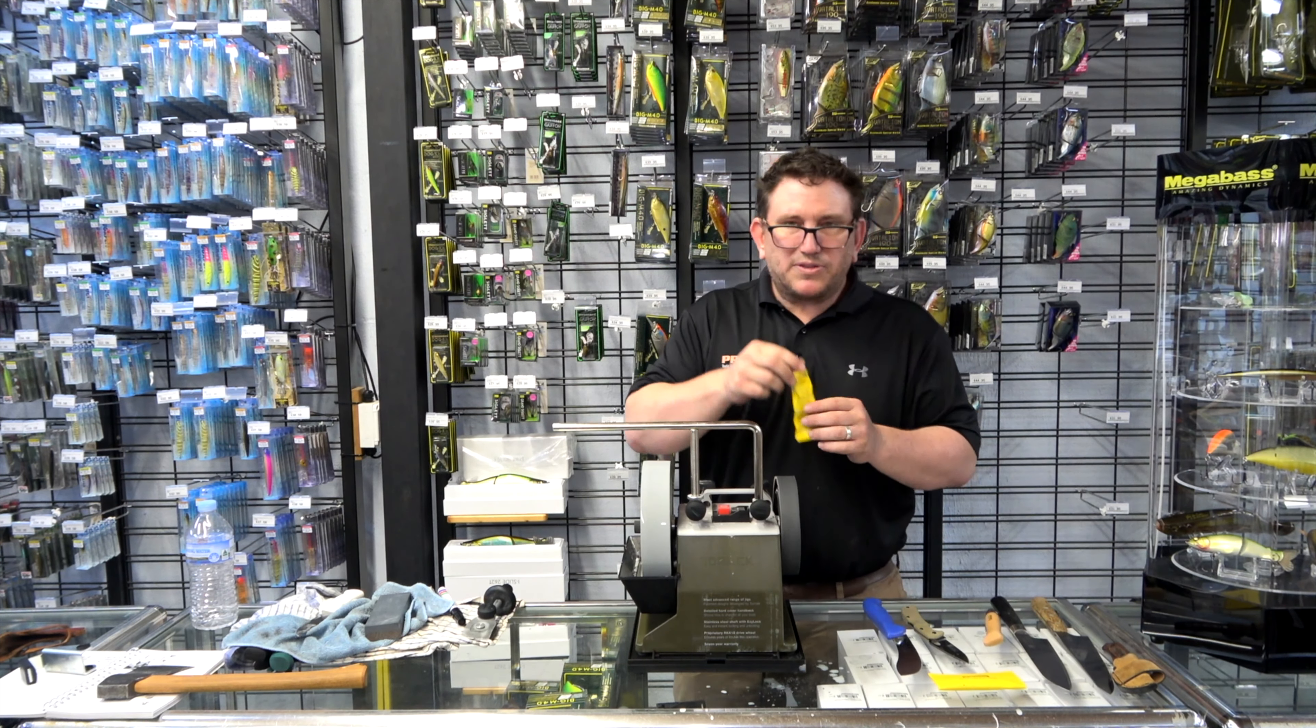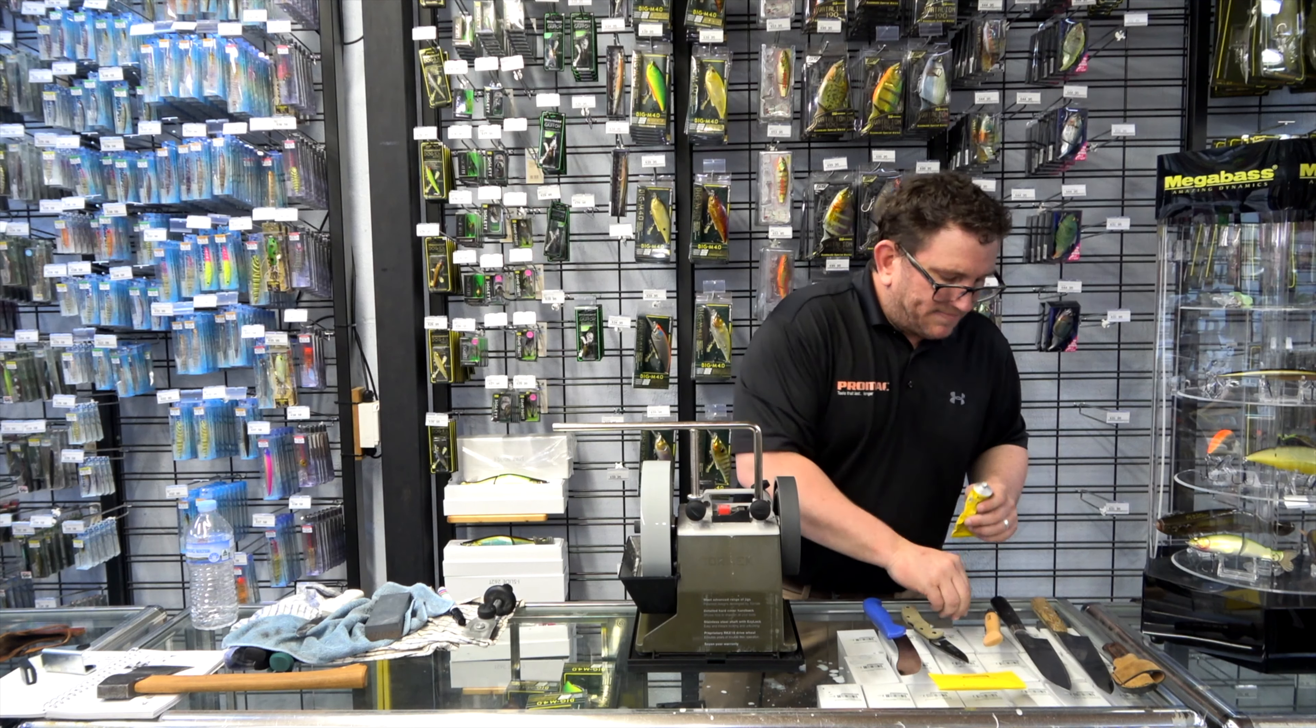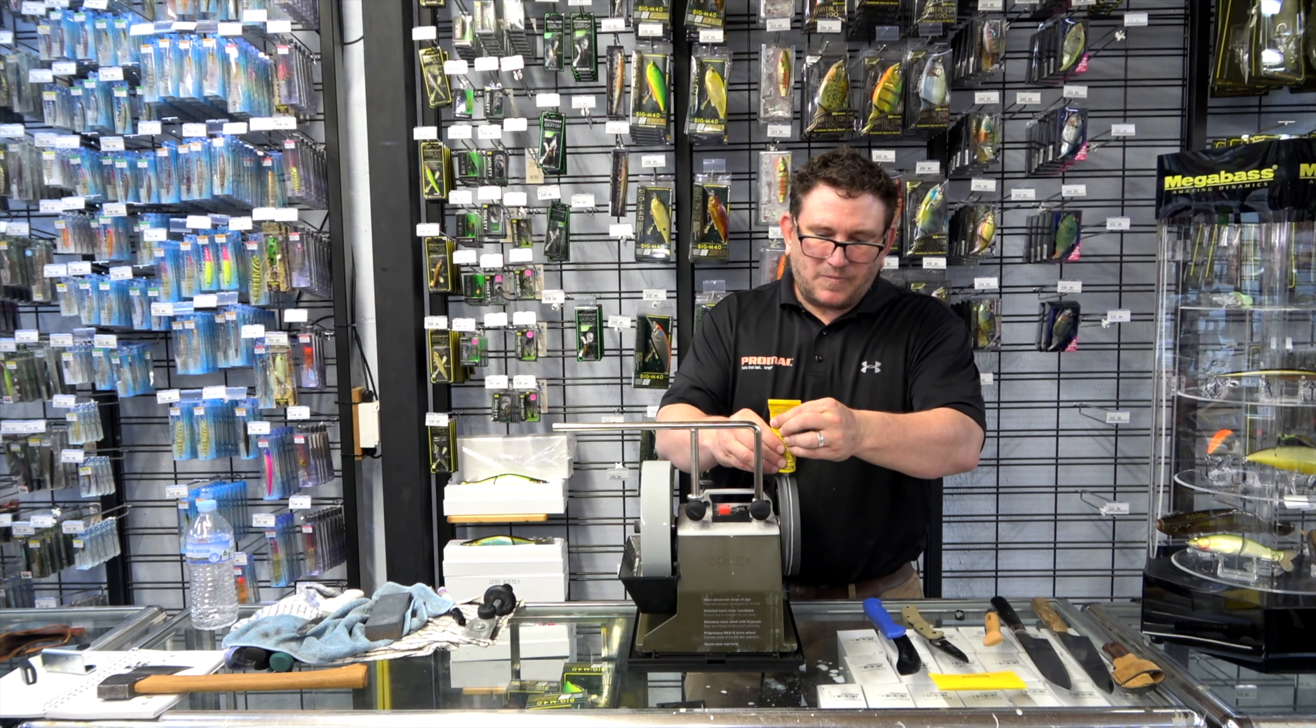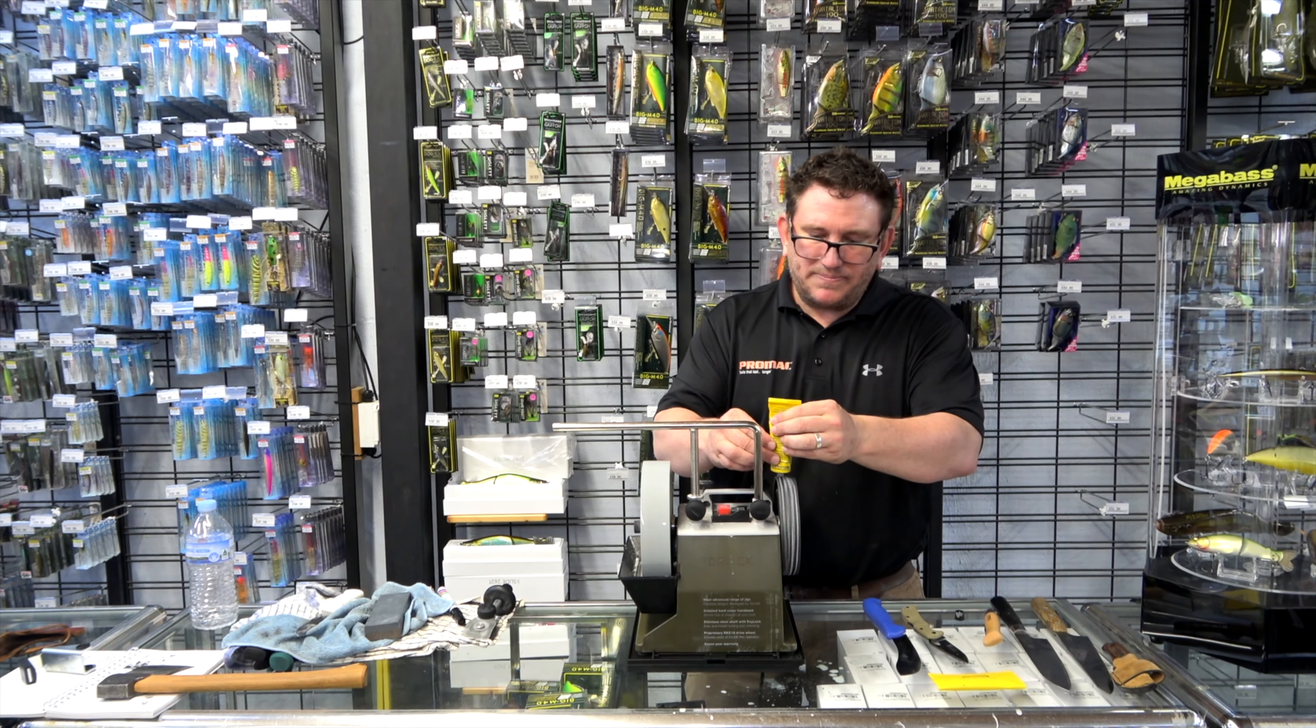With the leather honing strop, we've got the Tormac honing paste, which is around about a 3000 grit paste. This will just help deburr the knife. You'd rather take the burrs off on the leather strop than in your food.